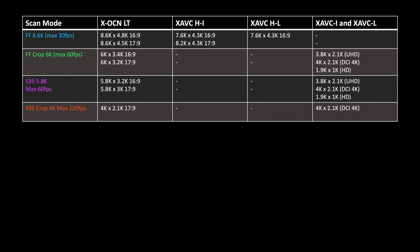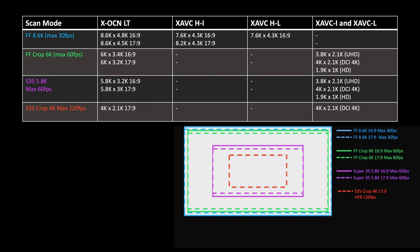XAVC-I can be selected when using any of the 6K or lower scan modes. In this table, we can see all of the different scan modes along with the codecs available at each scan mode in the Burano version 1 firmware. Future firmware updates may add new scan modes or codec variations not listed here, so if you do have a later firmware version, please refer to the manual for your firmware version. I hope you found this video useful. Please take a look at the other videos in the series to find out more about configuring the camera for different shooting styles, or on how to use the ND filter, autofocus, or stabilisation functions.